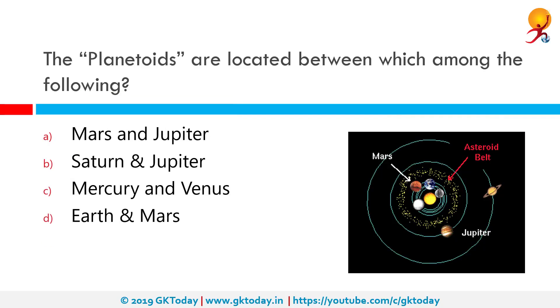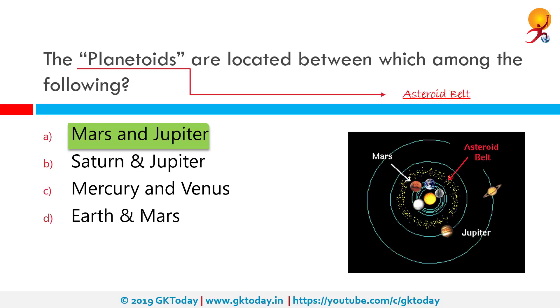The planetoids are located between Mars and Jupiter. They are basically asteroids — asteroids in the asteroid belt.